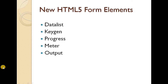The first four elements — datalist, keygen, progress, and meter — we already discussed in the last classes, covering HTML form elements and formatting elements. The last one is output. The output element represents the result of a calculation. We will check the demonstration of these elements.